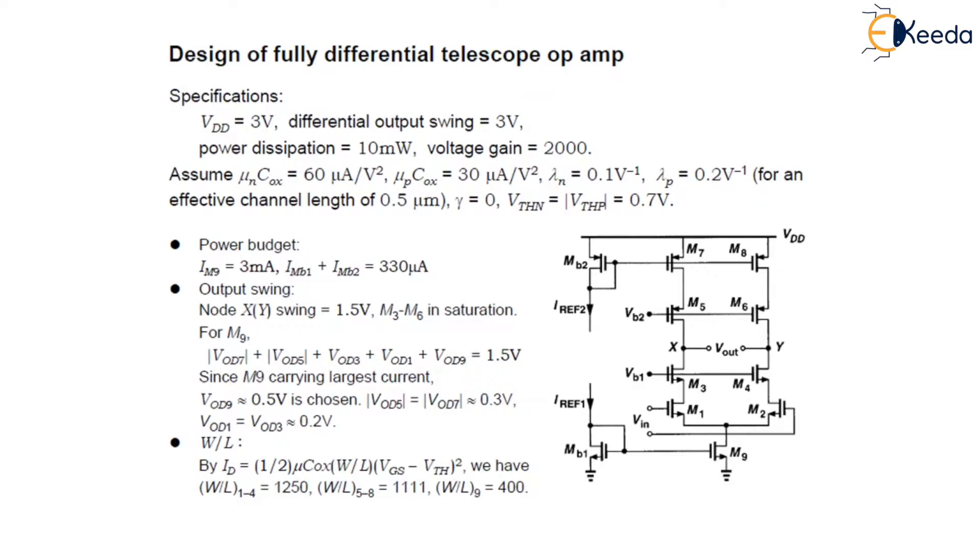The peak-to-peak differential output swing is among 3 volts and the power dissipation is 10 milliwatts whereas the voltage gain is given as 2000. We have assumed that the value of μn Cox is 60 microamperes per volt squared, μp Cox is 30 microamperes per volt squared.